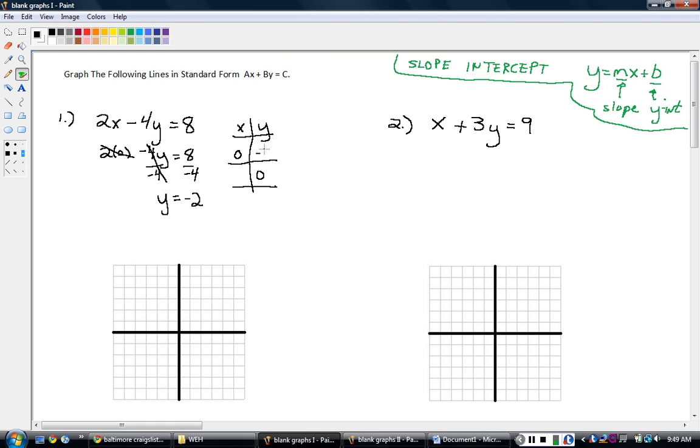That's just one point now. When X is zero, Y is negative 2. This is still the line we're dealing with. There's a bunch of points on this line, we're just finding two of them right now. So now I find the other point.